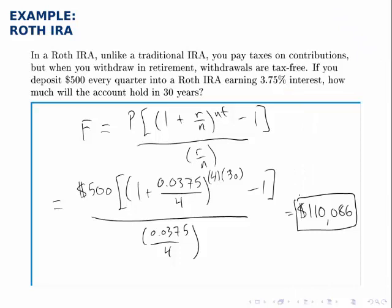So, if you deposit $500 every quarter into a retirement account earning 3.75% interest, after 30 years, the account will hold $110,086.